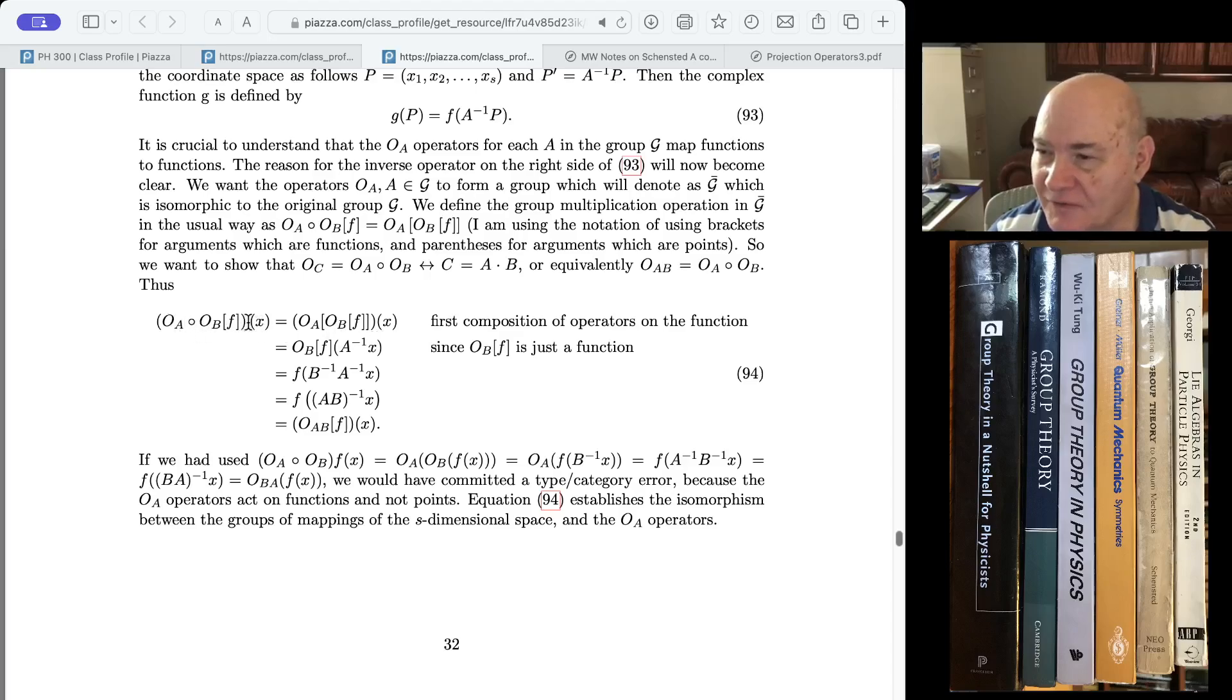We say, okay, let's take a random point, just a point in the domain, and see how it acts. Now, the first thing we have to do is we have to figure out this thing in parentheses, which is the composite operator. Now, remember, we defined it, or I defined it as the usual composition of operators. So it's OA act on OB acting on F. F is a function. We're not taking F of X. We're just taking the function as an argument. We're going to apply the OB operator to it. That will give us another function. And then we'll have OA acting on this.